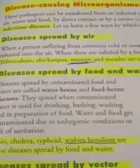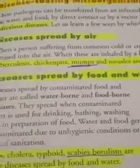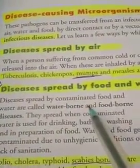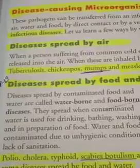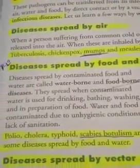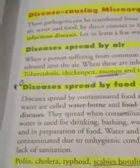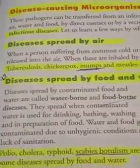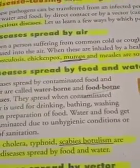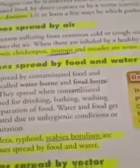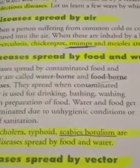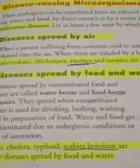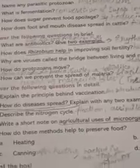Second example: disease spread by food. Diseases spread by contaminated food are called foodborne diseases. Food becomes contaminated due to unhygienic conditions or lack of sanitization — for example, houseflies sitting at a dirty place and then landing on your food. When you consume it, you get diseased. In this way diseases are spread. Thank you class, we continue in the next part.